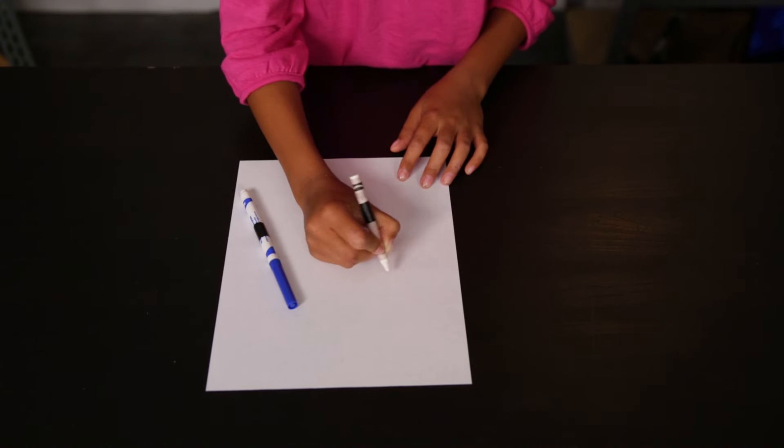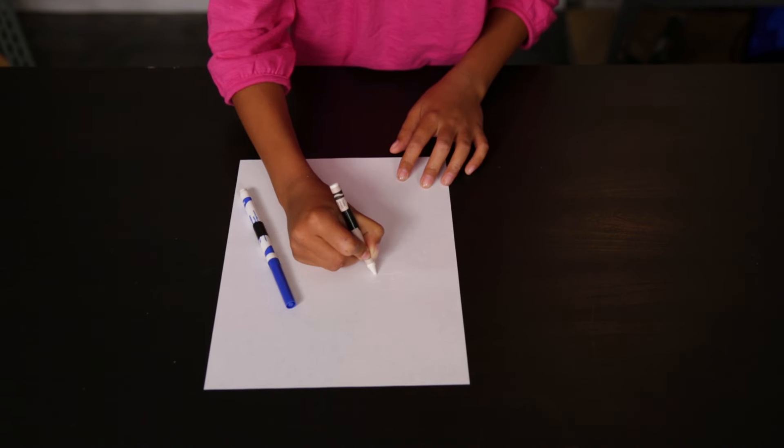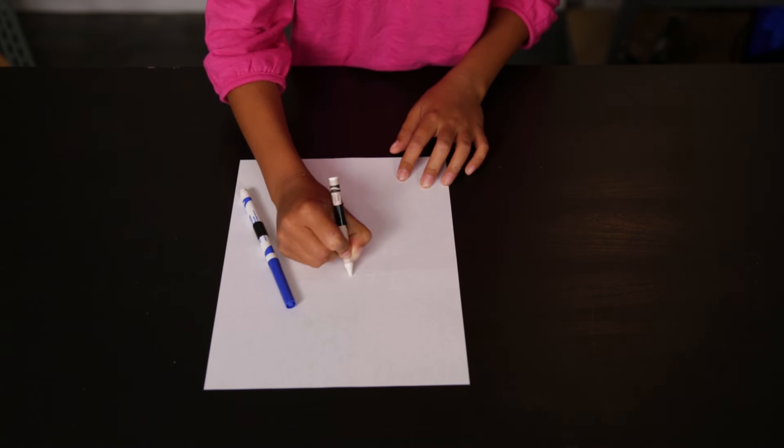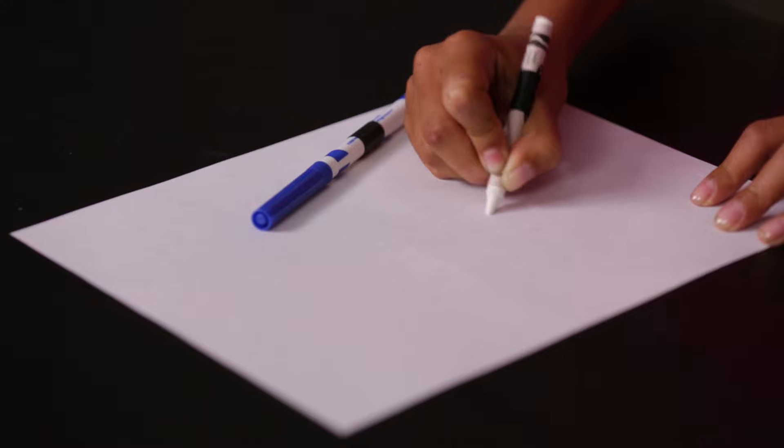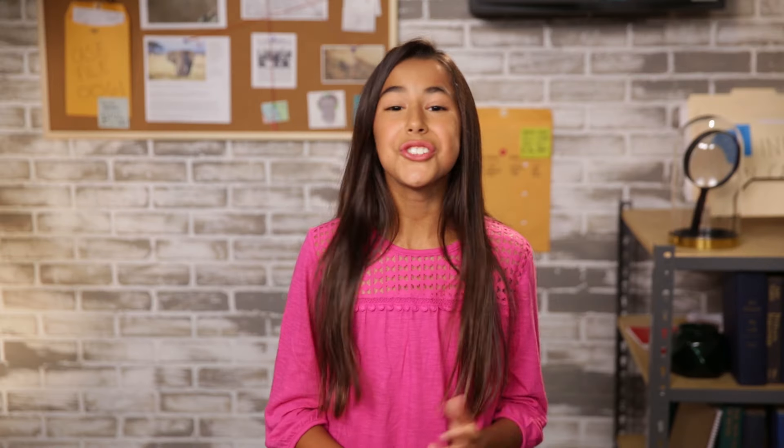This one's pretty straightforward. You just need to get out a piece of paper and use your white crayon to write the message. The toughest part is remembering where you wrote it. You don't want to scribble all over your message after all. Once you're satisfied with your message, you can hand it to a friend.